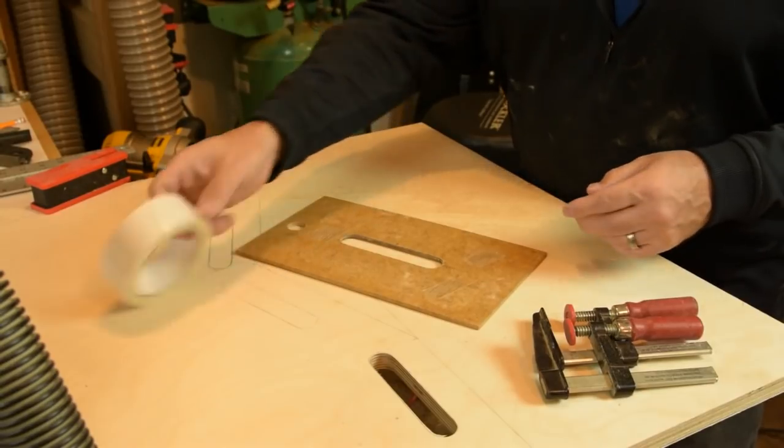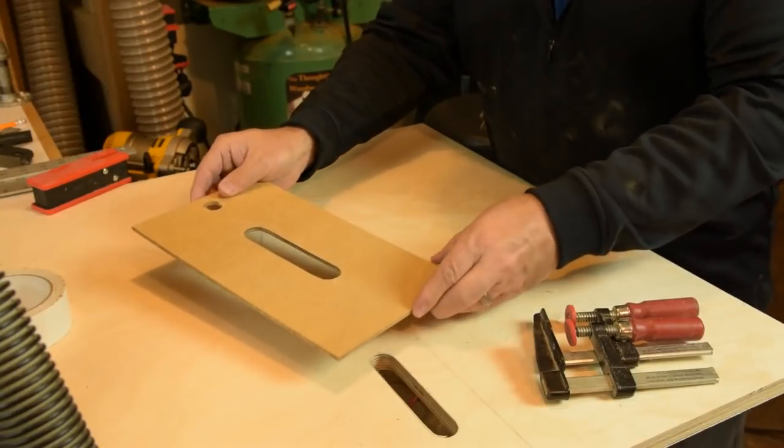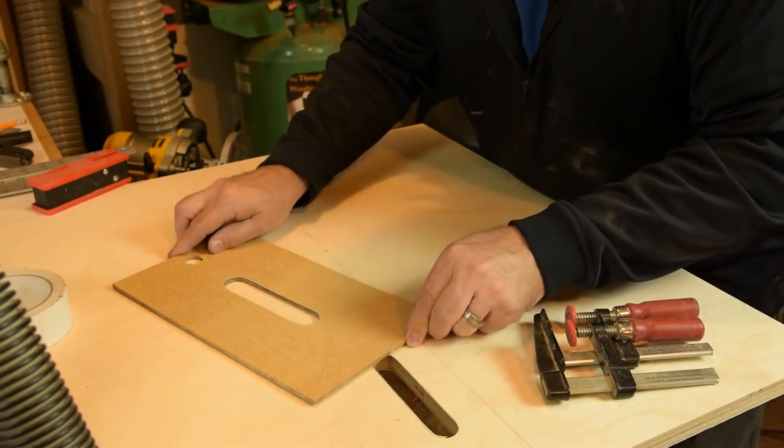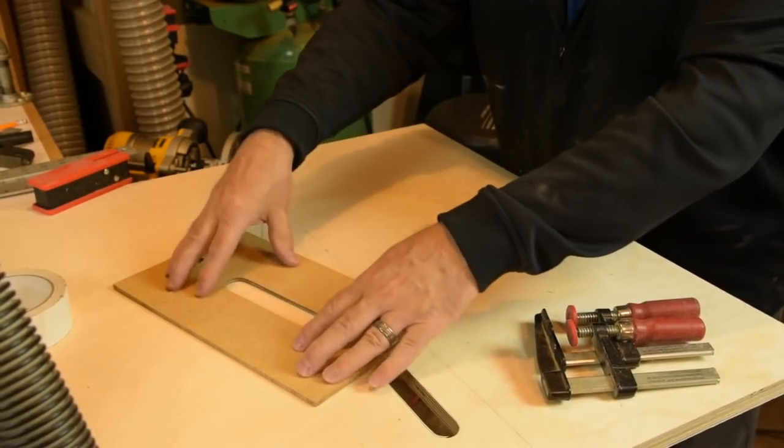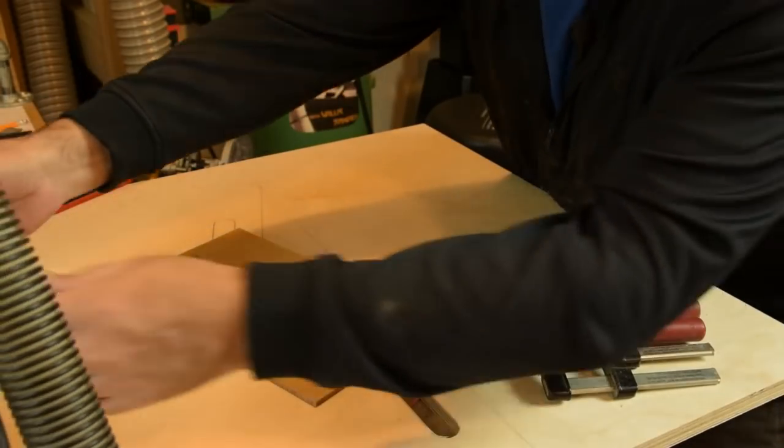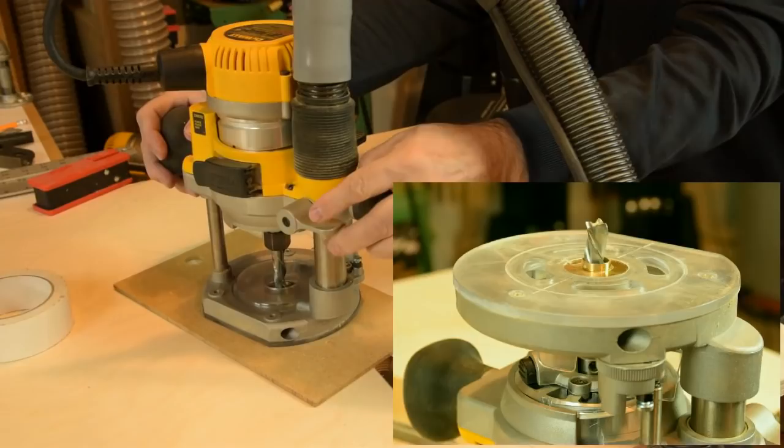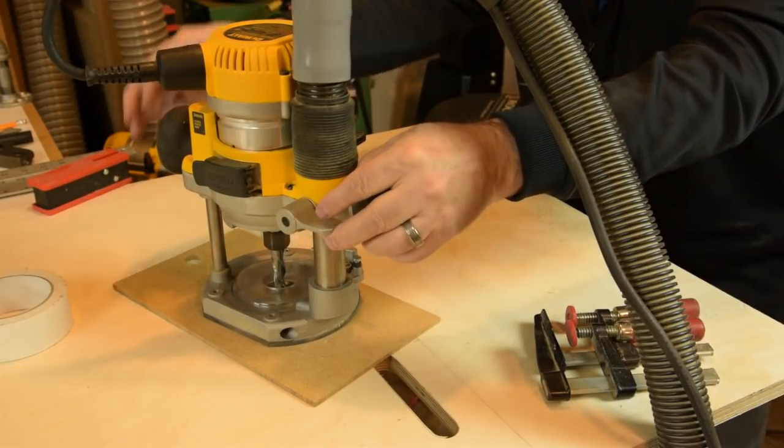So with a little double sided tape on our template for the handle cutouts, we can set those right in position over our layout lines and just press them in place. From there we'll route them out with a two step process. The first of which uses a spiral bit and a template guide and we'll go ahead and rough that out.